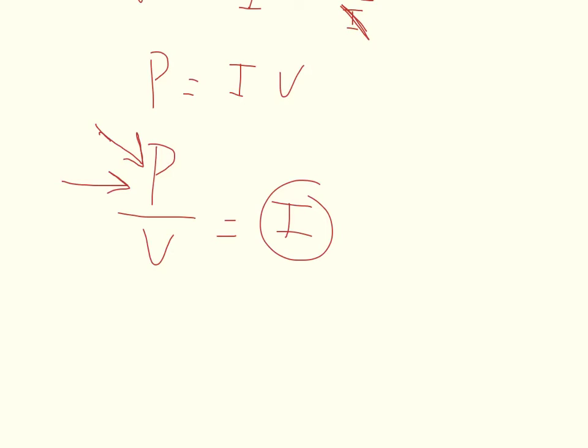Now it tells us in the problem that the voltage originally is transmitted at 3,600, so I'll use V1 for my voltage in the first equation, and then it's transformed down to 120 volts.